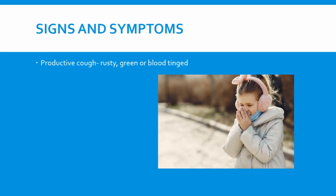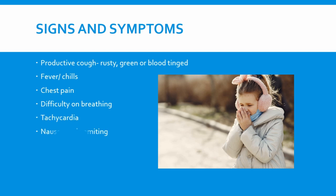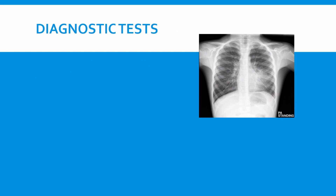Signs and symptoms include: the patient will have a productive cough, which can be rusty, green, or blood-tinged. The patient can have fever or chills, chest pain, and difficulty in breathing. They can have tachycardia — that is, an increase in heart rate — as well as nausea and vomiting. The patient can also have body weakness.